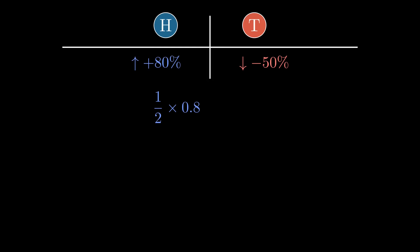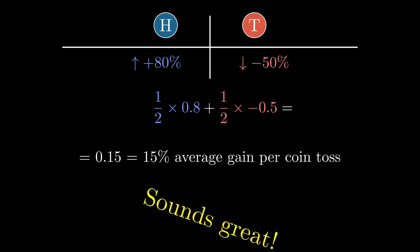You have a 1/2 chance of 0.8 gain plus a 1/2 chance of negative 0.5 loss. That's an arithmetic mean of 0.15, a 15% average gain per coin toss. Sounds great. Would you be willing to play this game?